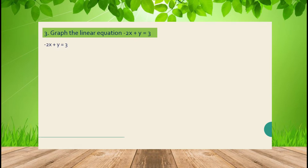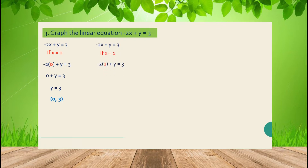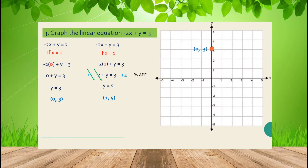Another example: graph the linear equation -2x + y = 3. Assign x = 0 and substitute: y = 3. So the first point is (0, 3). For x = 1, substitute and get y = 5, giving the second point (1, 5). Graph (0, 3) and (1, 5), then connect the two points. That is the line from the equation -2x + y = 3.